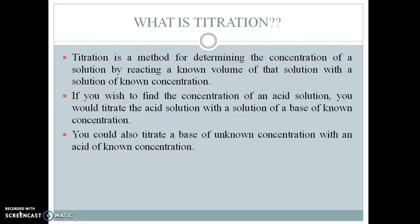What is the meaning of titration? Titration is a volumetric method in which we can determine the concentration of an unknown solution by reacting it with a solution whose concentration is known to us. For example, if you wish to find out the concentration of an acid solution, you would titrate it with a solution of a base of known concentration, or you can also titrate a base of unknown concentration with an acid of known concentration.